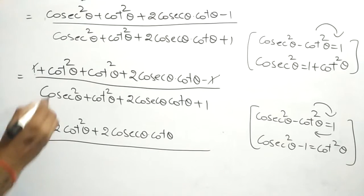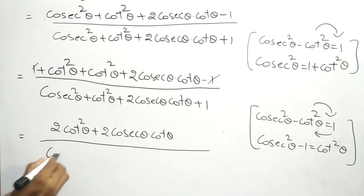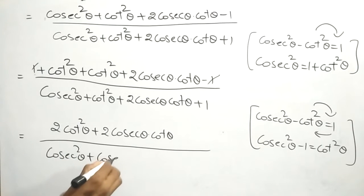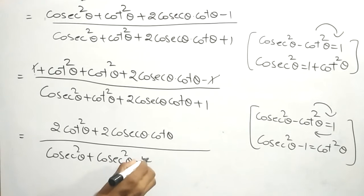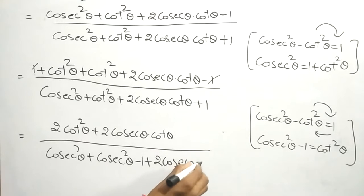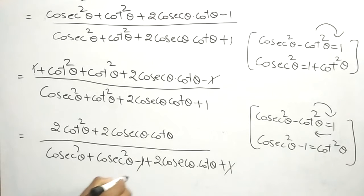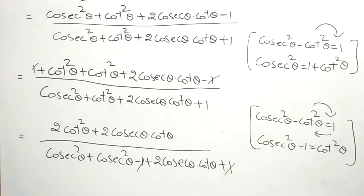In the denominator, in place of cot²θ we are writing cosec²θ - 1. That gives: cosec²θ + cosec²θ - 1 + 2cosecθ·cotθ + 1. So +1 and -1 cancel, and cosec²θ + cosec²θ becomes 2cosec²θ in the denominator.